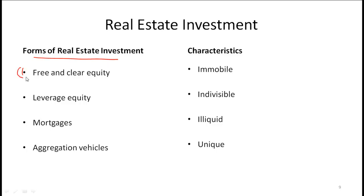One is free and clear equity. So this is where you purchase some form of real estate, be it a house or a building, office building, shopping mall, shopping complex, etc. So if you buy 100% of that property, then we say that you have free and clear equity, or essentially 100% ownership in that piece of real estate.